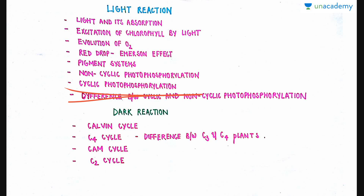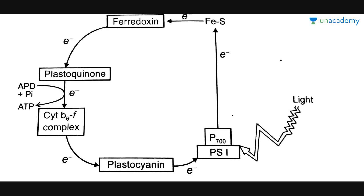Before starting non-cyclic photophosphorylation, I will first be talking about cyclic photophosphorylation. I would like to clarify that the main product we require from the cyclic photophosphorylation process is ATP — that is, assimilatory powers that can further be transferred to dark reaction for the preparation of sugars or glucose.